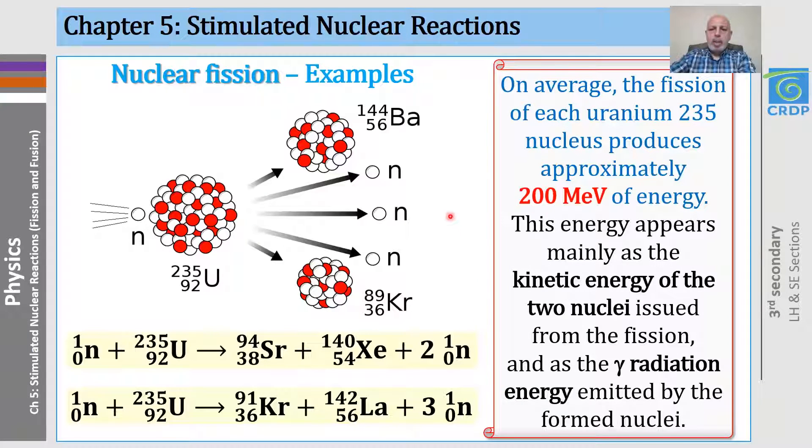On average, the fission of each uranium produces approximately 200 mega electron volts, and this energy appears mainly as the kinetic energy of the two nuclei issued from the fission and as the gamma radiation energy emitted by the unstable nuclei that are formed by the fission.